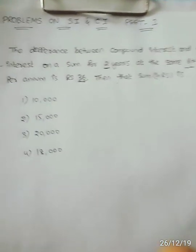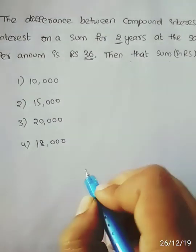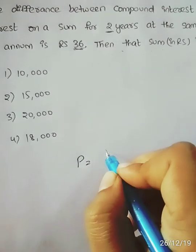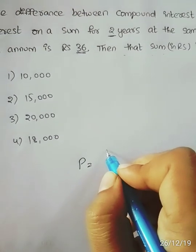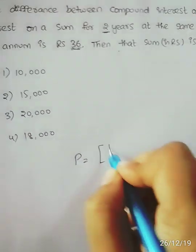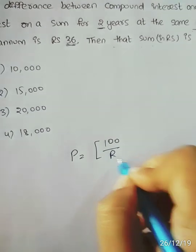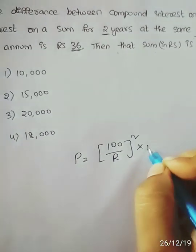I am going to give you the Simple Interest and Compound Interest formula. The simple answer is: P is equal to (100/R) whole square into D.